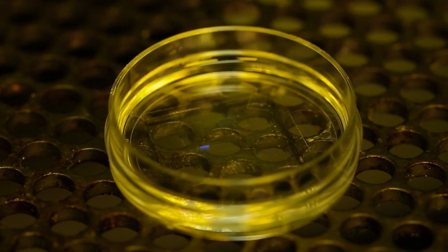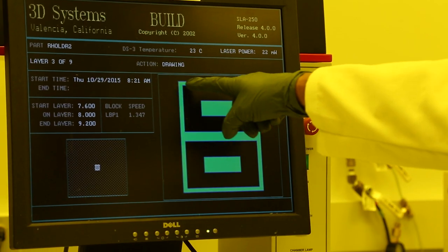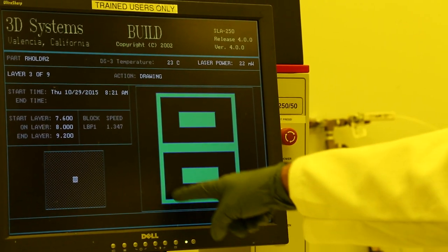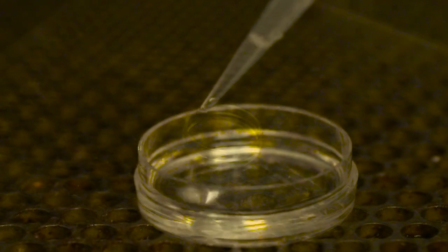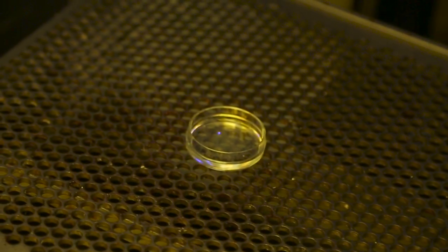They start by using a laser to 3D print skeletons, or scaffolds, made of polymers similar to those used in soft contact lenses. Wherever the laser is shining, the material is polymerizing and making that slightly harder scaffold.